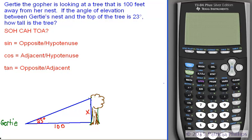The first problem states, Gertie the gopher is looking at a tree that is 100 feet away from her nest. If the angle of elevation between Gertie's nest and the top of the tree is 23 degrees, how tall is the tree?